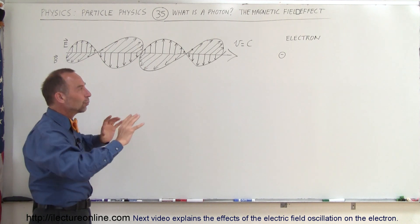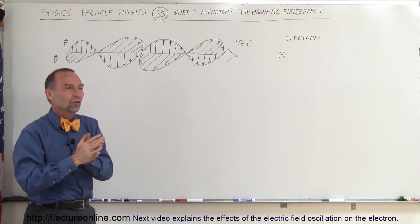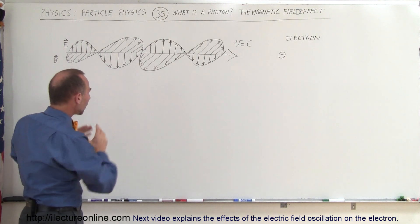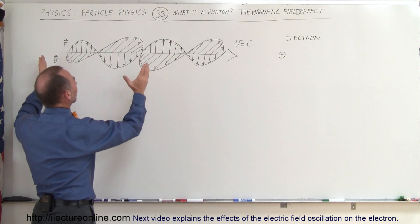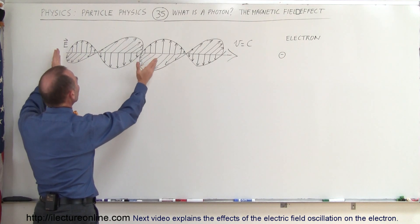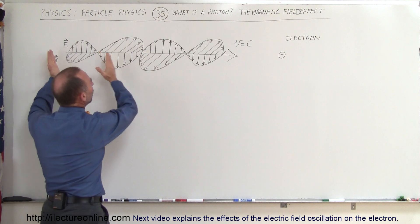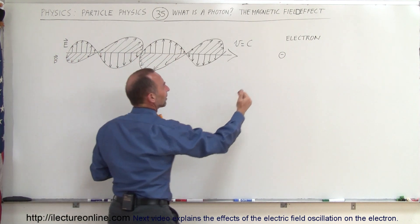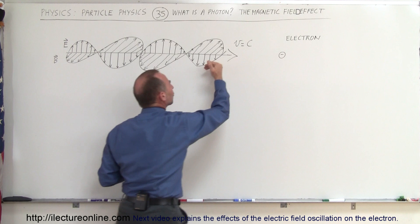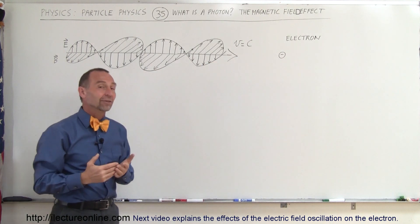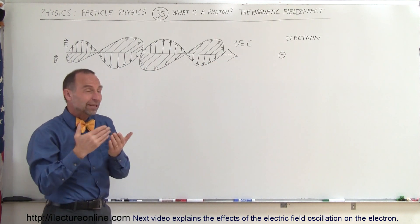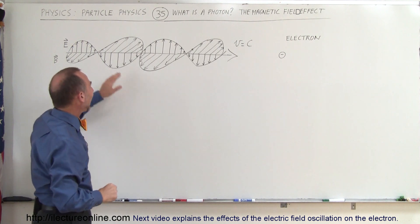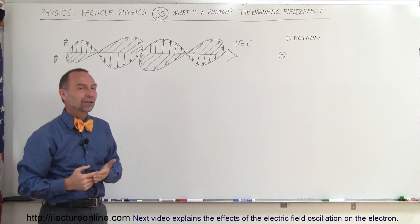But if for a moment we change the relative coordinate system so that it is moving along with the photon, then we have an electron that seems to be moving towards the photon at the speed of light. Now there's going to be an effect between the charged electron and the oscillating magnetic field.